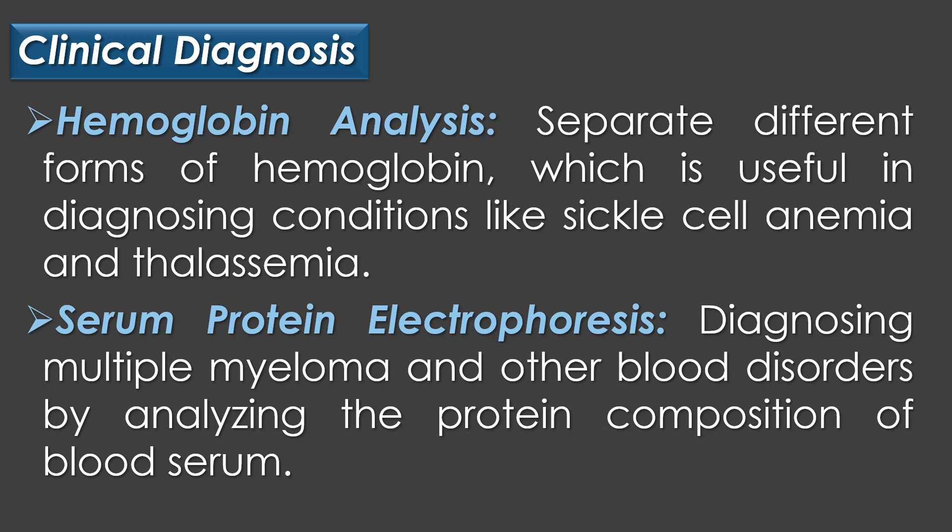In hemoglobin analysis, electrophoresis is used to separate different forms of hemoglobin, which is useful in diagnosing conditions like sickle cell anemia and thalassemia. In serum protein electrophoresis, electrophoresis helps in diagnosing multiple myeloma and other blood disorders by analyzing the protein composition of the blood serum.